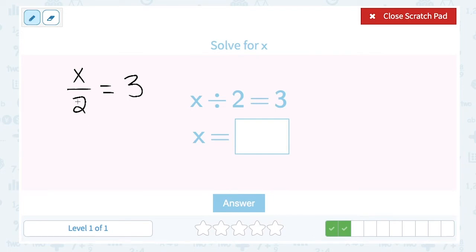x divided by 2 is equal to 3. If I have x divided by 2, how would I get back to just having the x alone? The opposite of divided by 2 is times 2, so I'm going to multiply this fraction by 2 over 1.